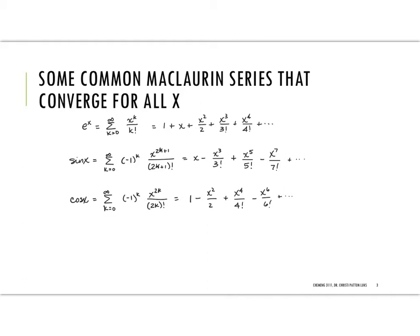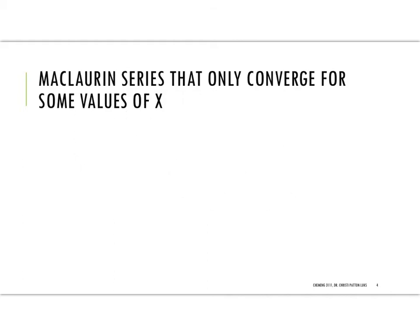But other series are not going to converge for every possible value of x. They'll only converge for select values. So let's look at some well-known ones of those. So in this case, we're going to have ones that are going to have a radius of convergence. And that means that for some region around the a value, and if we're doing the McLaurin series around 0, that there's going to be a radius where this converges or does not converge.